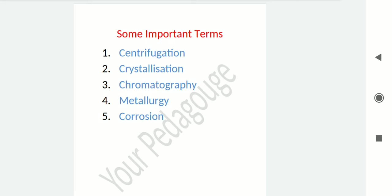Now let's talk about crystallization. The process of separation of a pure solid in the form of its crystals is called crystallization. For example, purification of salt from sea water — we crystallize the salt from sea water. That is called crystallization.